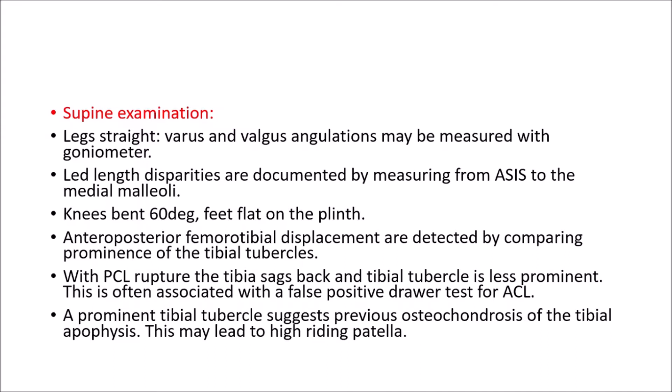Next is the supine examination. The legs will be straight and valgus and varus angulations will be measured with a goniometer. Leg length disparities are documented by measuring from the anterior superior iliac spine to the medial malleoli. The knees are then bent to 60 degrees with the feet flat. Anterior posterior femoral tibial displacements are detected by comparing the prominence of the tibial tubercles. If the PCL is ruptured, the tibia will sag behind and the tibial tubercle is less prominent, often associated with a false positive anterior draw test for the ACL. Excessively prominent tibial tubercles suggest previous osteochondrosis of the tibial apophysis, which may lead to a high-riding patella.